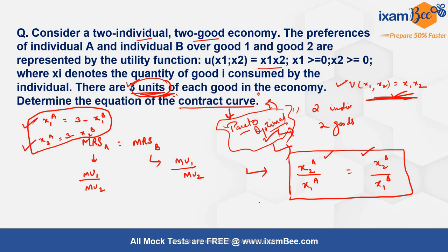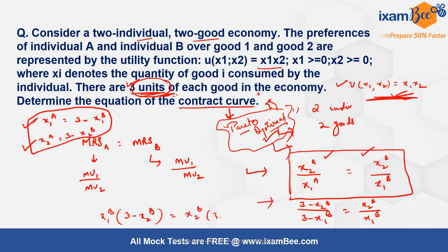Substituting the binding constraints into the MRS equality: (3 − x2b) / (3 − x1b) = x2b / x1b. Cross-multiplying gives: (3 − x2b)·x1b = x2b·(3 − x1b), which expands to 3x1b − x1b·x2b = 3x2b − x1b·x2b. The x1b·x2b terms cancel out.